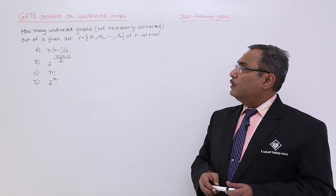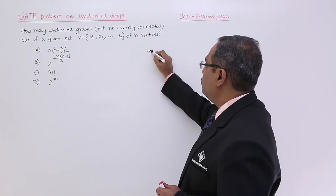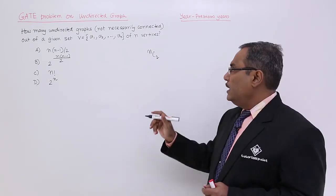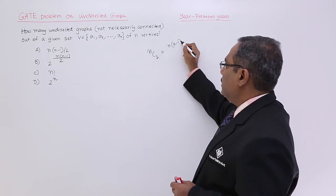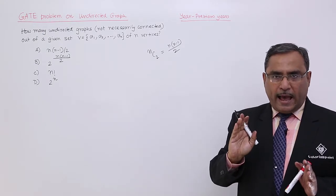For n number of vertices, we always have nC2 number of edges. We can have nC2 number of edges, which is nothing but n(n-1)/2. So this number of edges we can have in maximum.